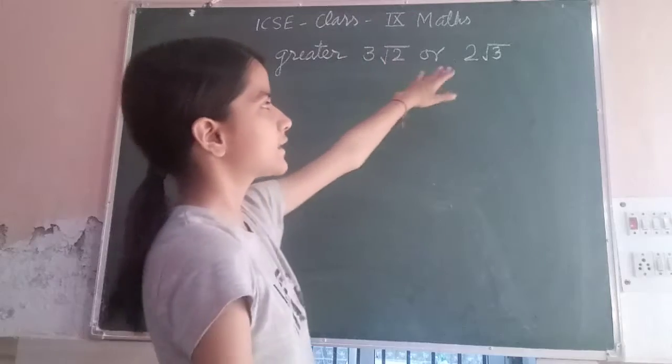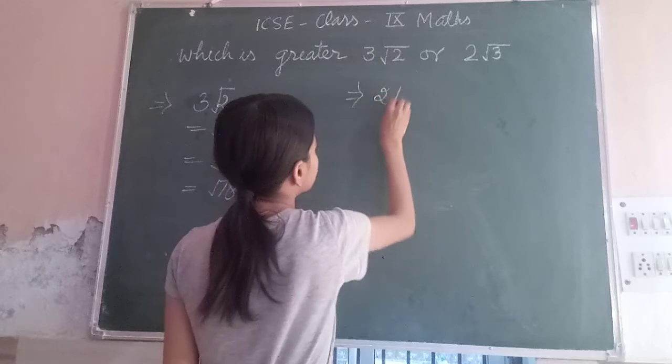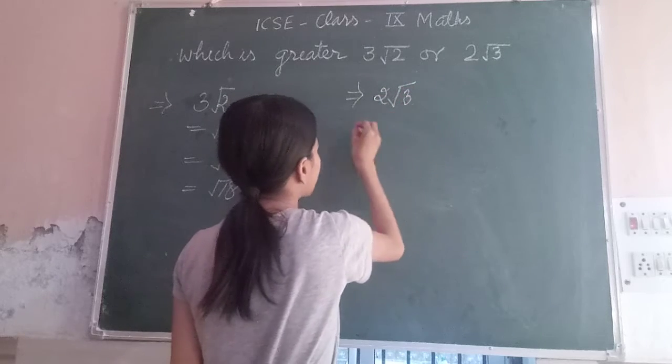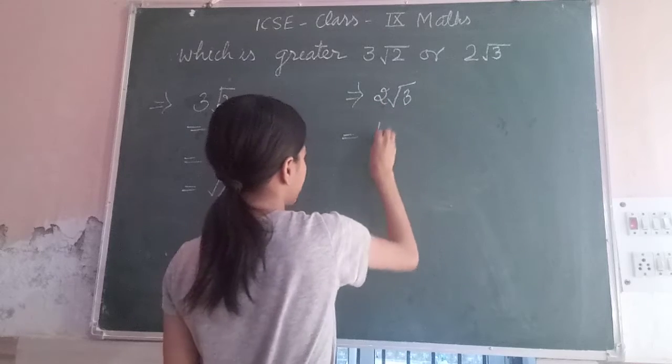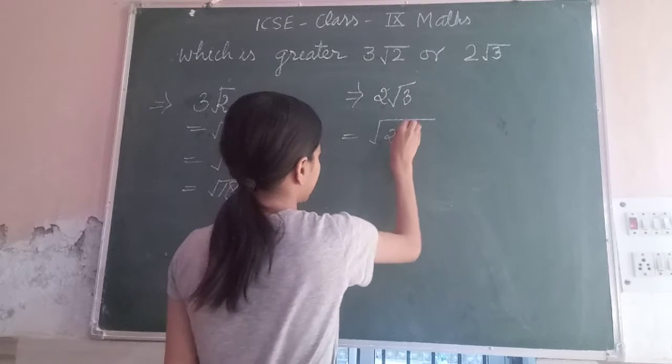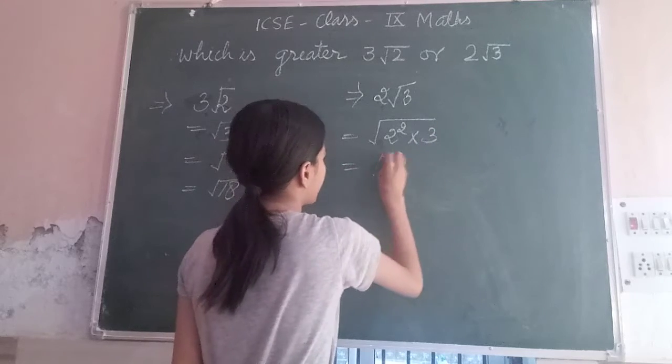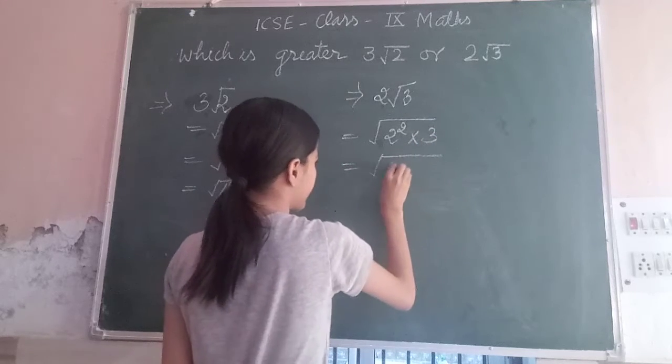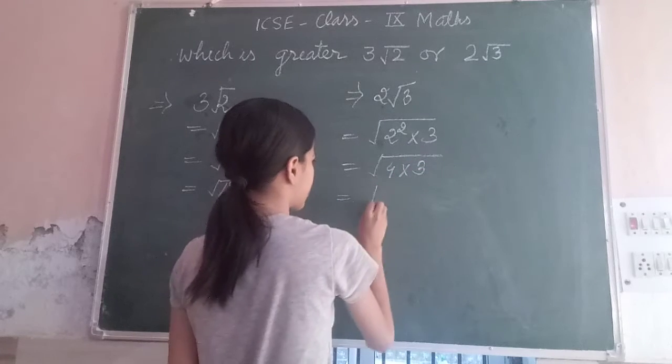Now we will take 2√3. We will get 2 squared times 3, which equals 4 times 3. And 4 times 3 equals 12.